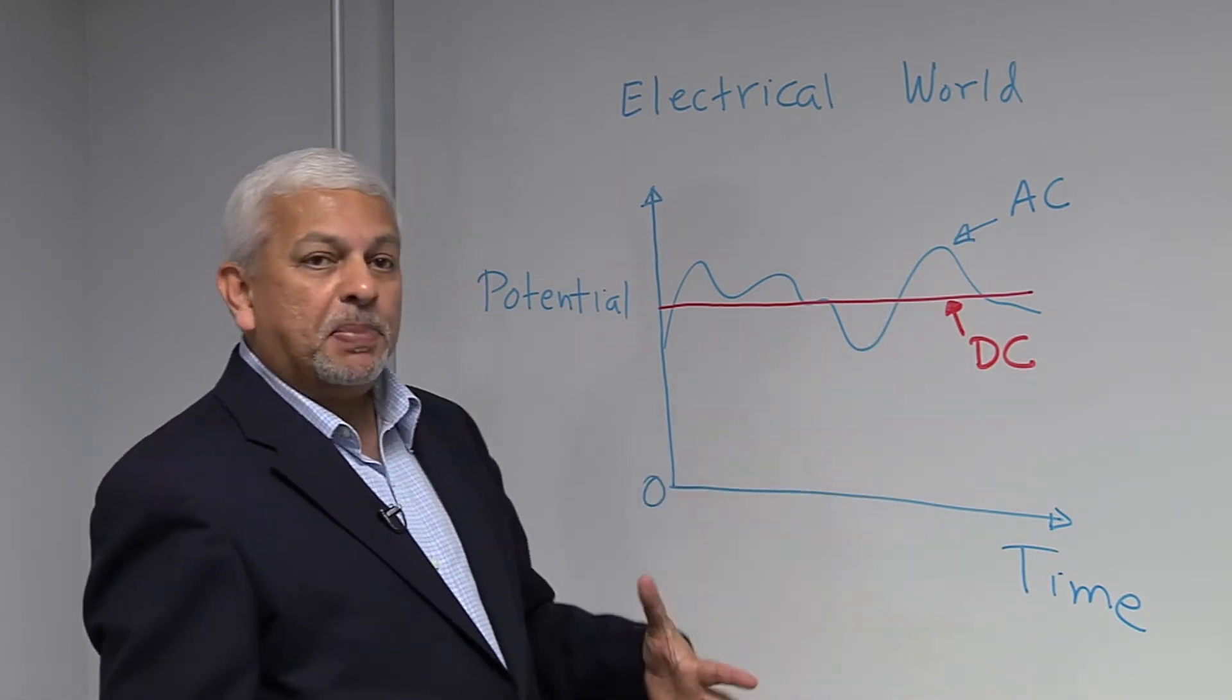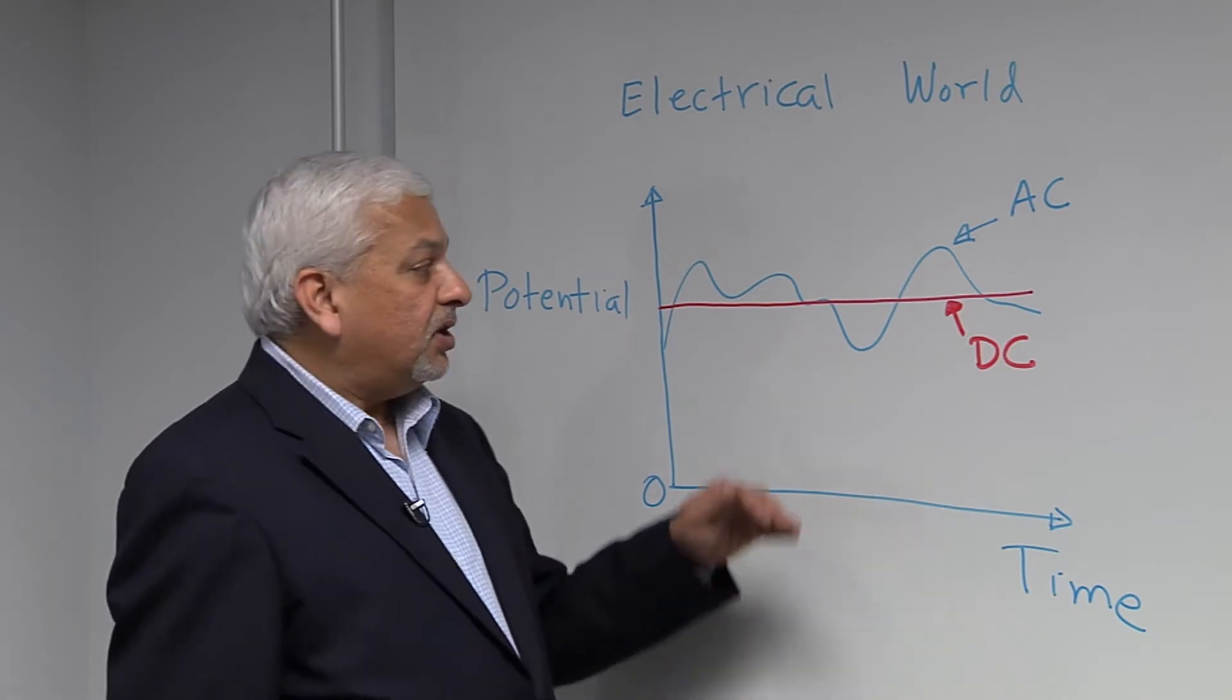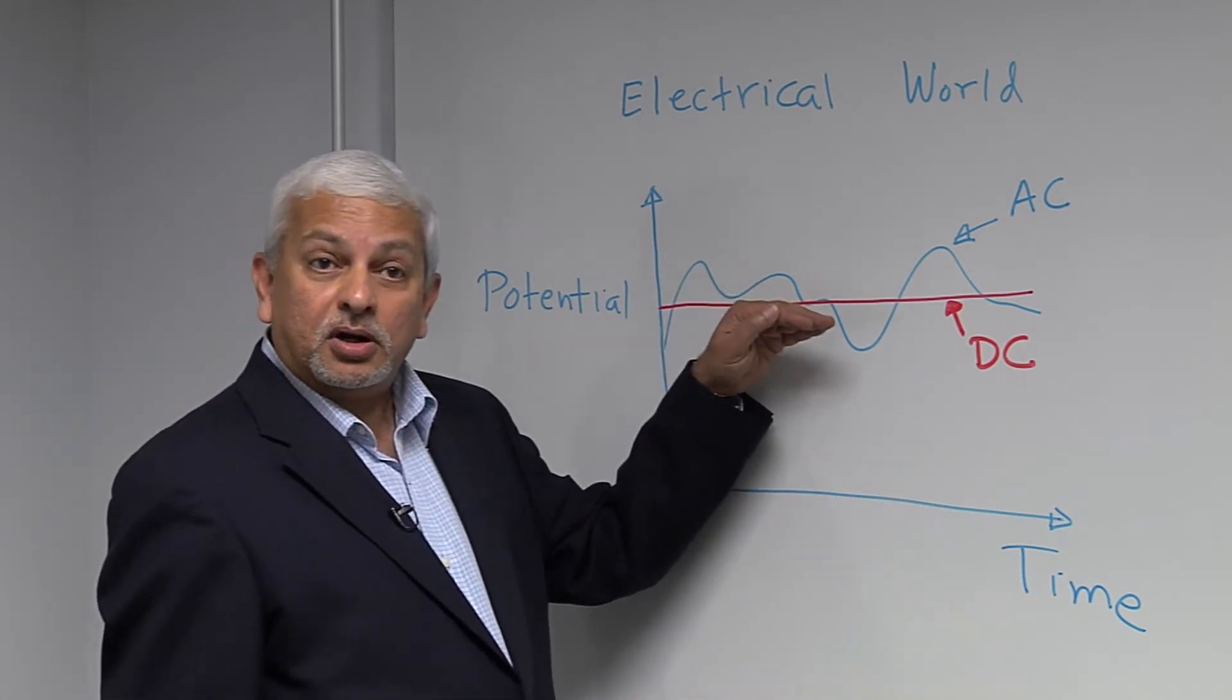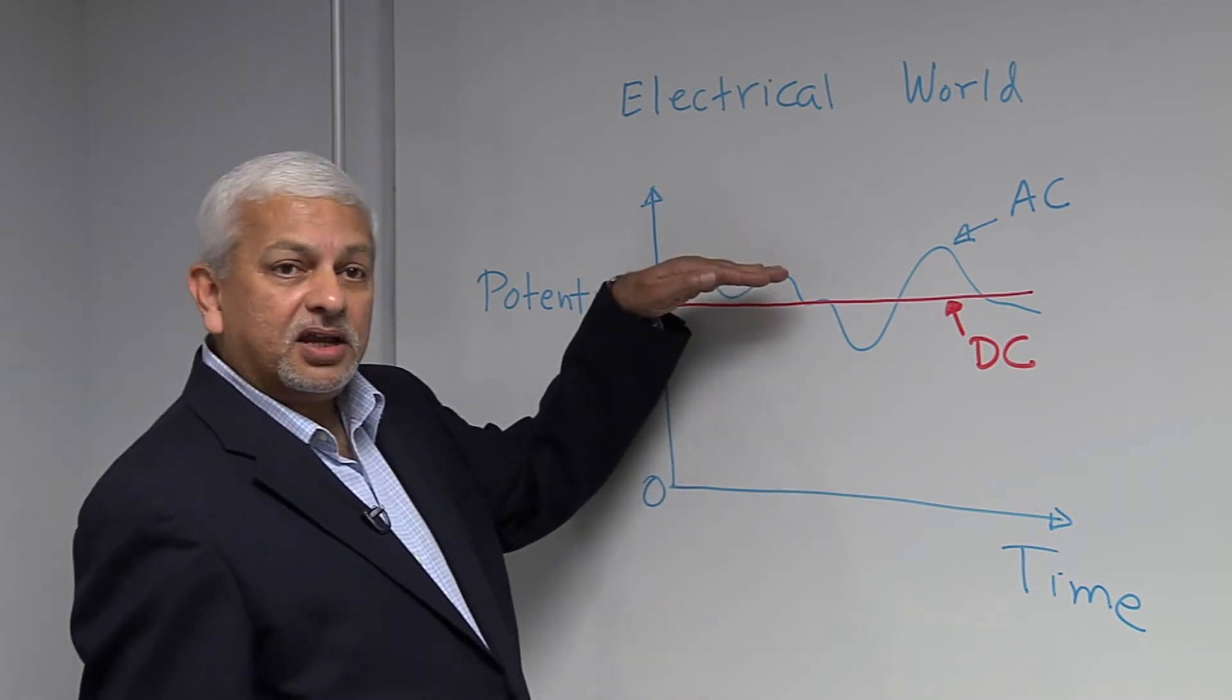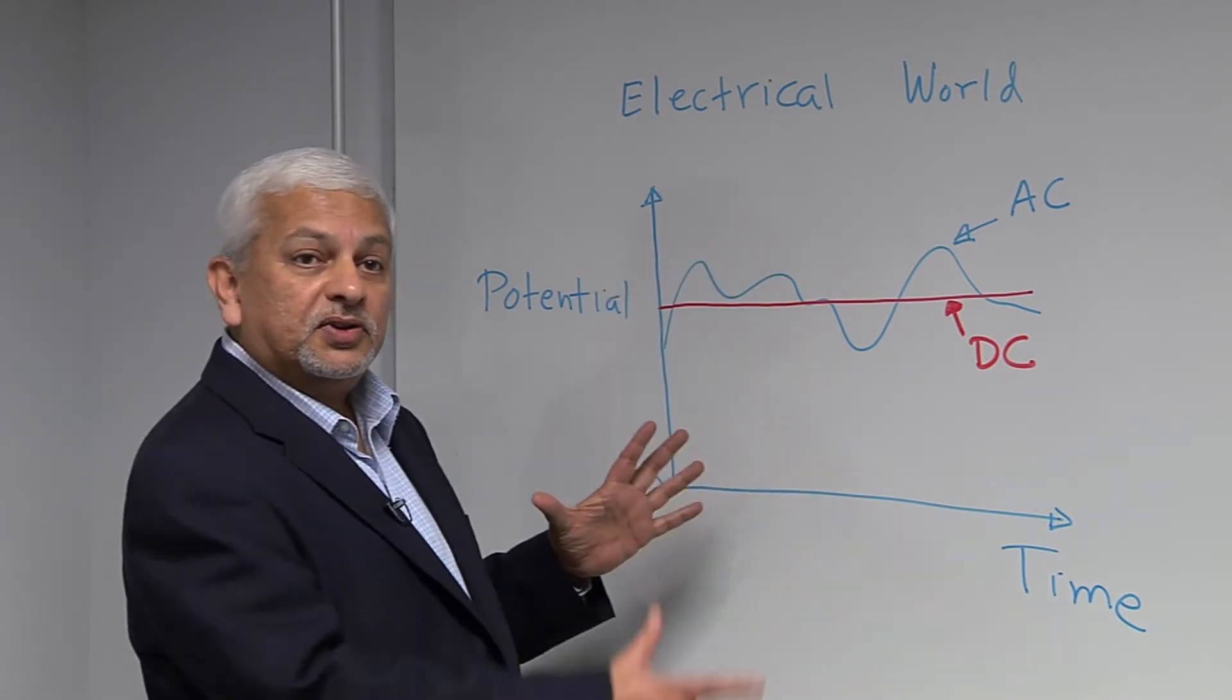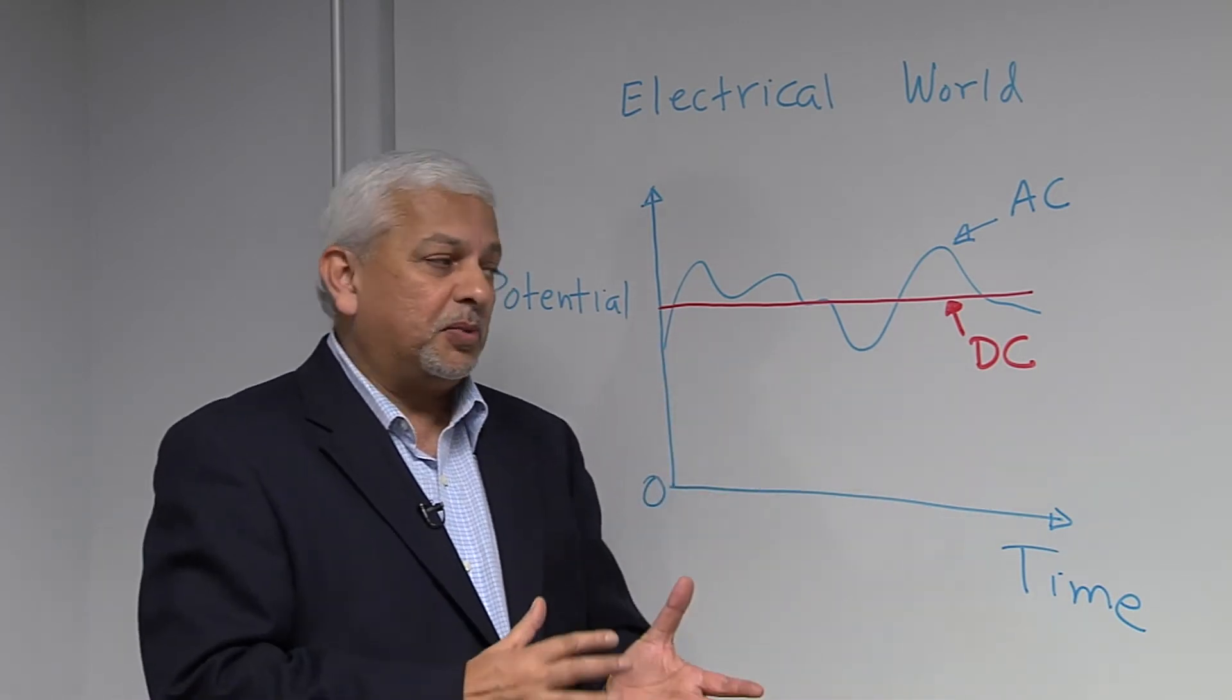Well, it turns out that the power contained in that signal is not only a function of the AC part, but the DC part also, because the potential is high with respect to zero, which means that it has a lot of power if you combine the DC part and the AC part.